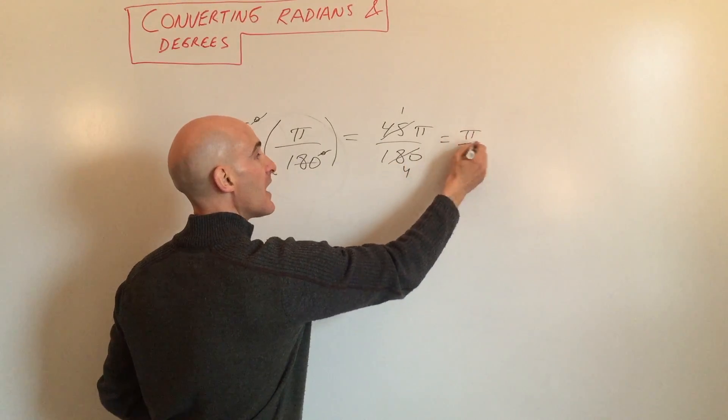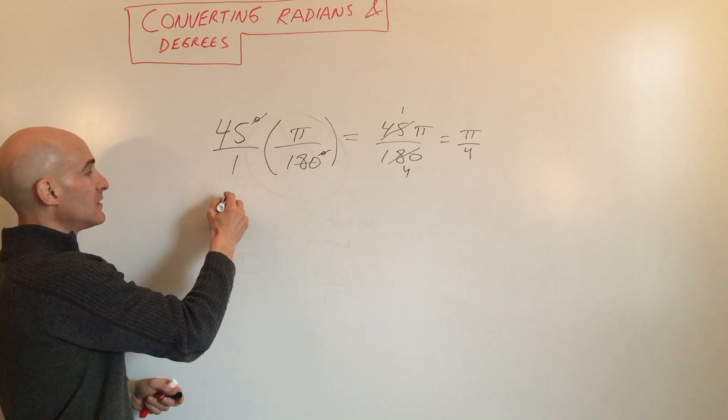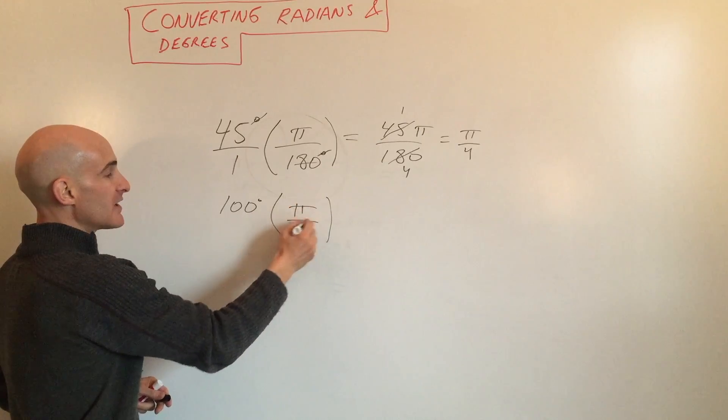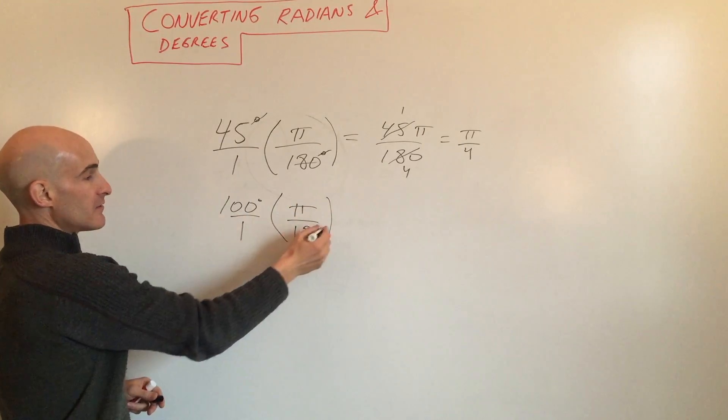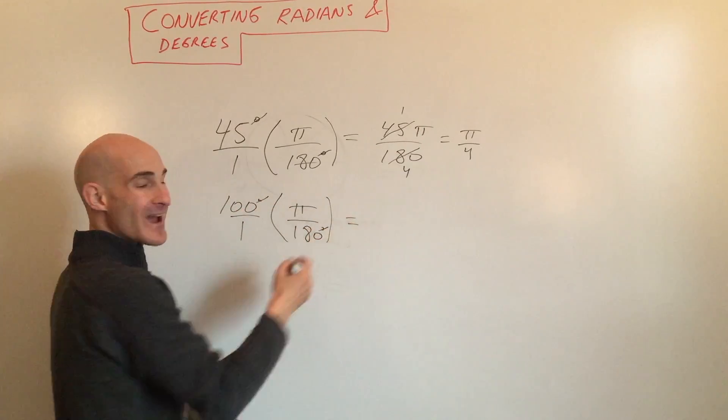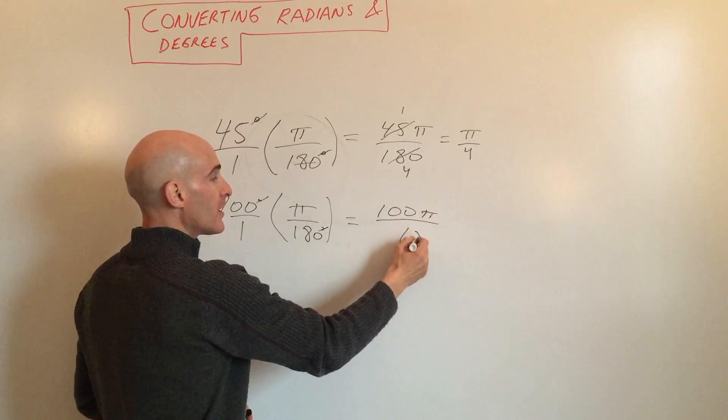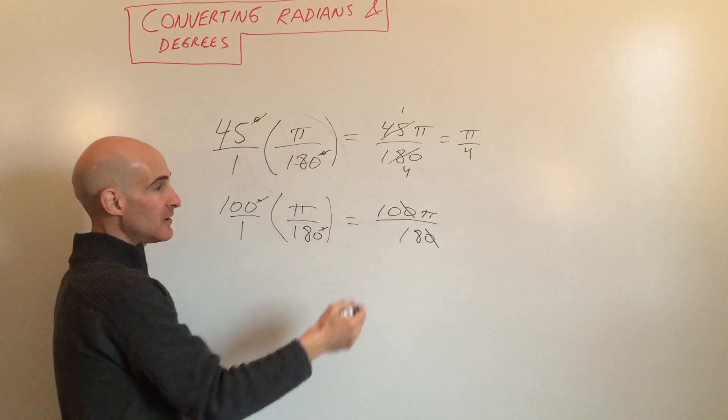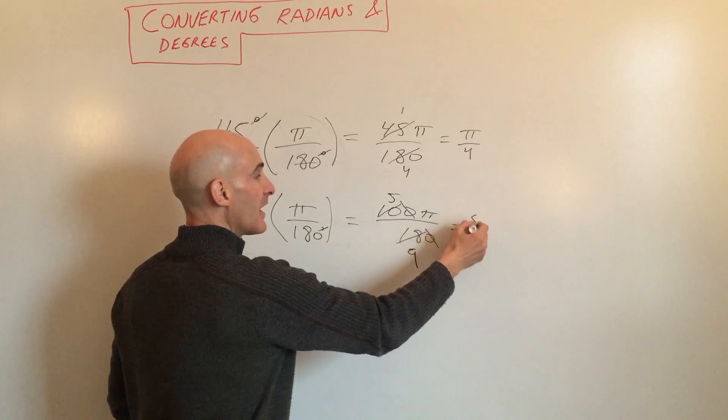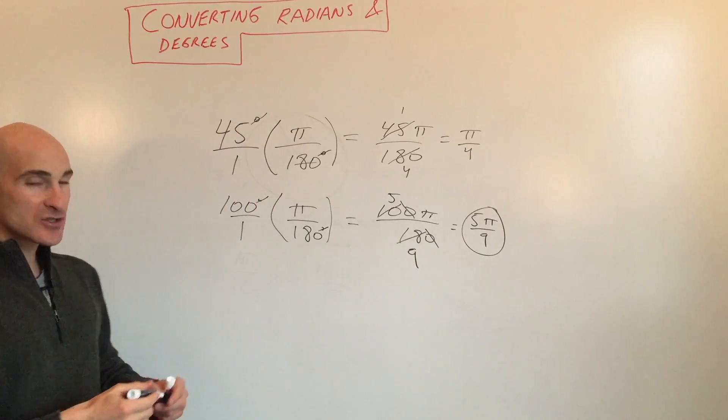Let's do another example: 100 degrees. Again, there's π radians for every 180 degrees. The degree units cancel, multiply the numerators and denominators and reduce. This gives you 100π over 180. You can reduce by dividing by 10, then reduce again by dividing by 2, so you get 5π/9 radians.